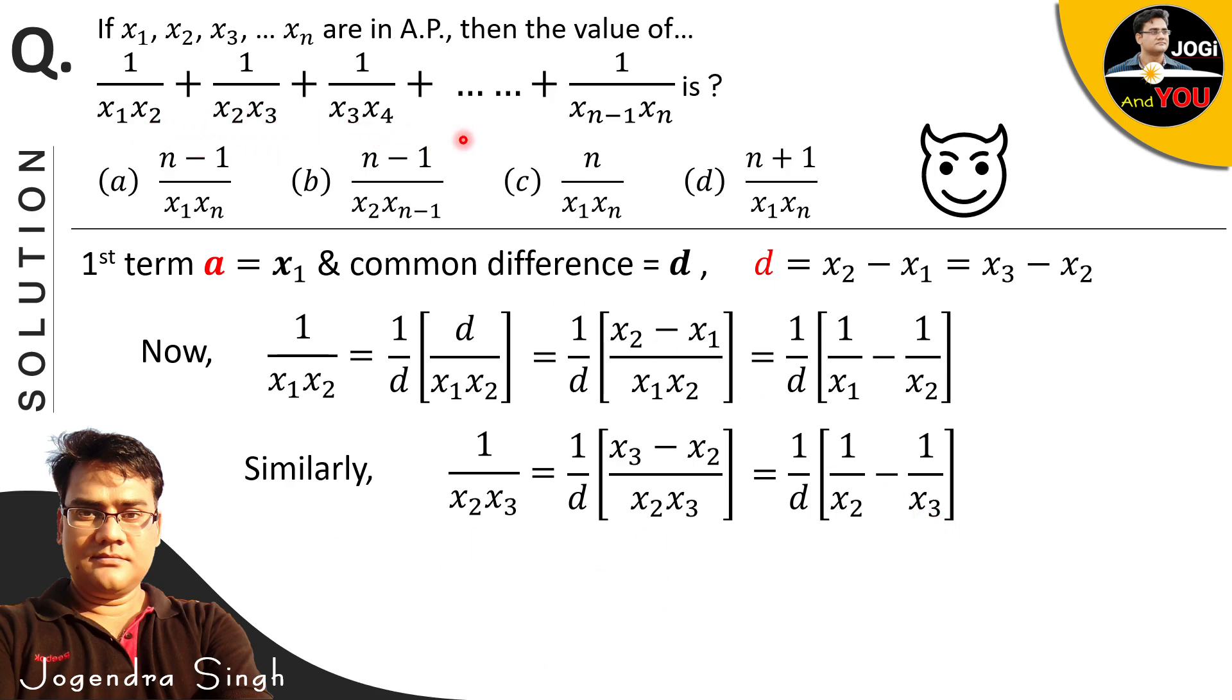And in the same way, we can find all these terms' values. So next we will find this last term's value. So here it is our last term of question, which is 1/(xₙ₋₁xₙ). According to what we have done previously, we look at our sequence. In the denominator we have x₁x₂, so in the numerator x₂ - x₁ is there. The same sequence is matching here - x₂x₃ in denominator, so in numerator x₃ - x₂ is there. So in the same way we will match here. Because we have in denominator xₙ₋₁xₙ, our numerator will be xₙ - xₙ₋₁. And after solving this, we have (1/d)(1/xₙ₋₁ - 1/xₙ).